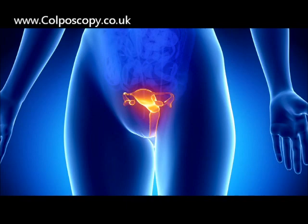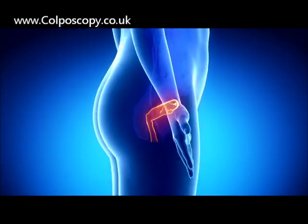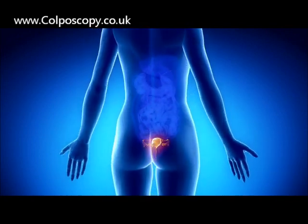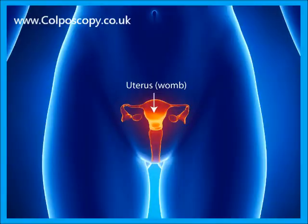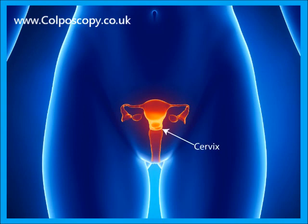In this video, we're going to talk about the cervix, which is part of the female reproductive tract situated in the woman's pelvis. The uterus is central in the reproductive tract and is connected to the fallopian tubes either side. Next to the fallopian tubes are the two ovaries. The vagina connects the uterus to the outside, and the lowest part of the uterus, which projects into the vagina, is called the cervix.